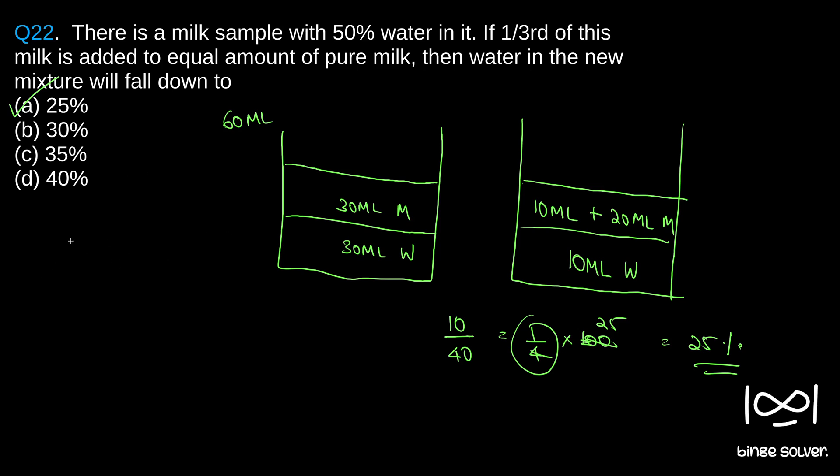So just a quick note. If we have taken the initial volume as V, what would have happened? We will get V by 2, V by 2. If we take one-third of that into a new bowl, then that becomes one-third of V by 2. That becomes V by 6 water and V by 6 milk. That is V by 3 milk was added.